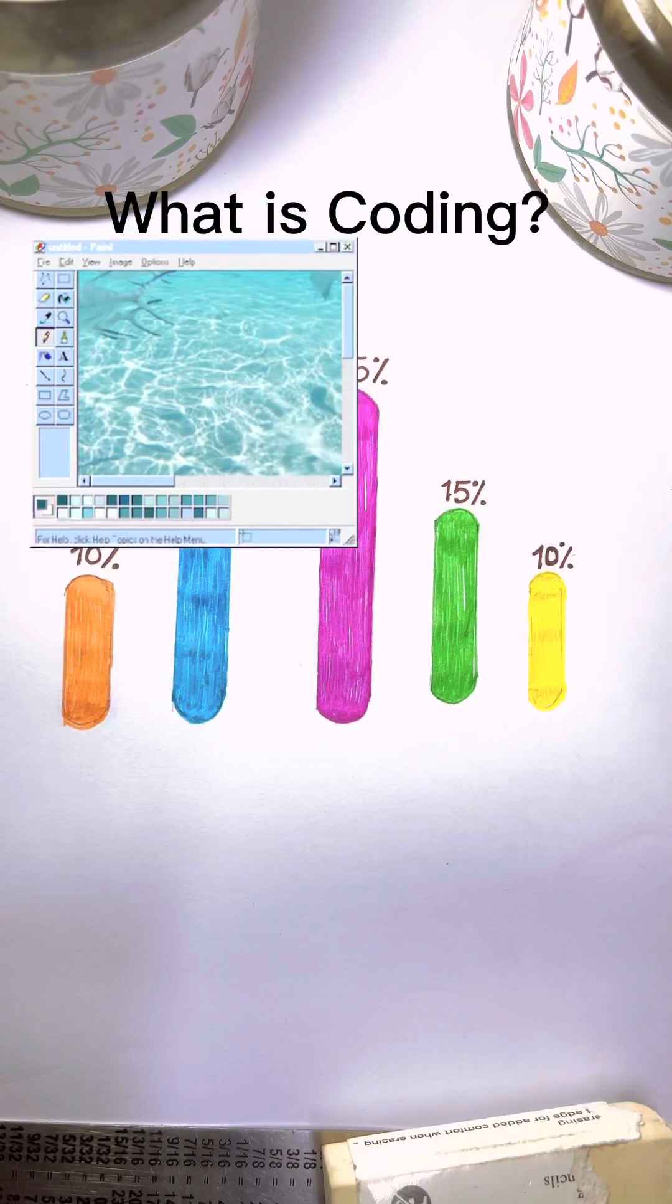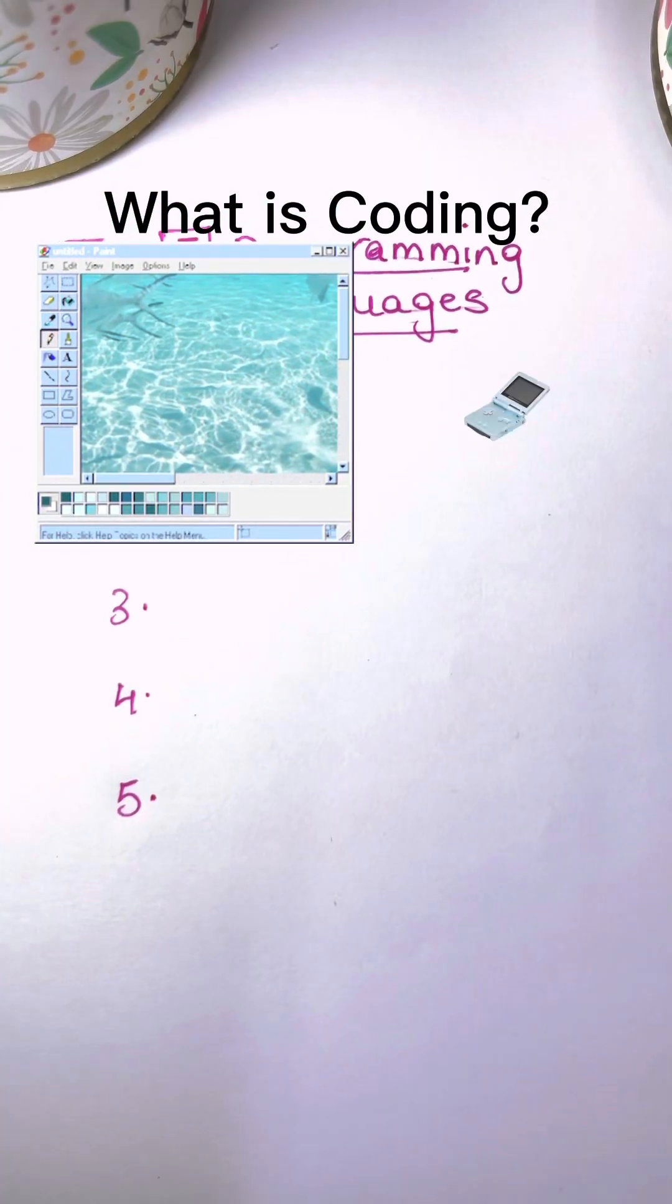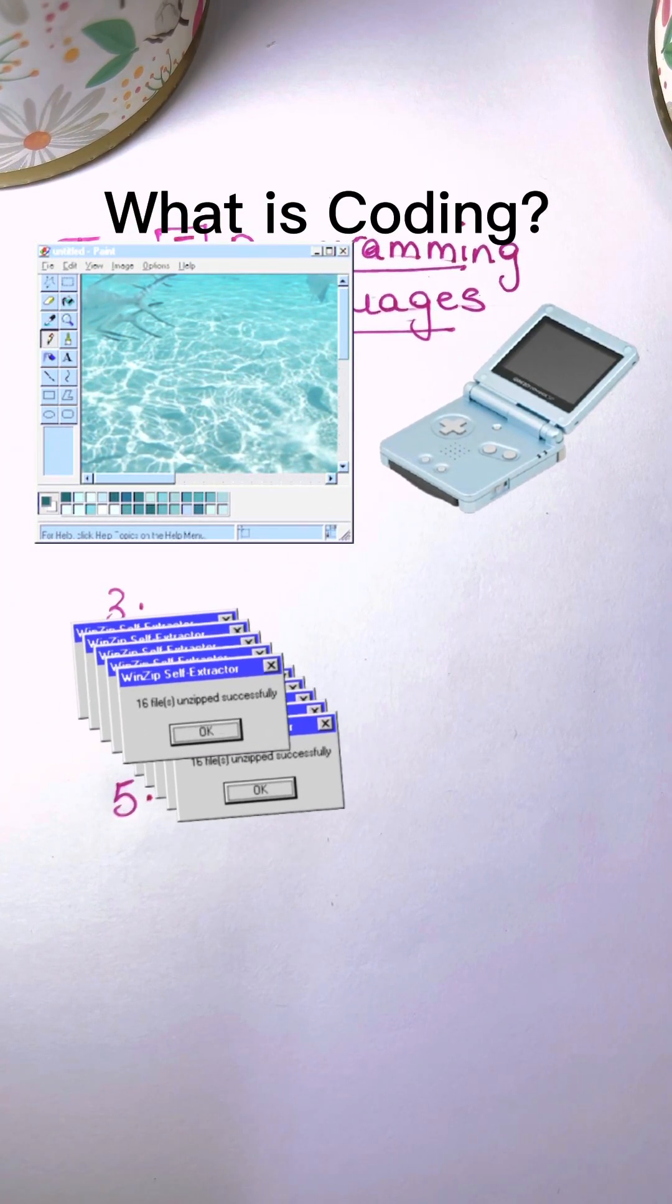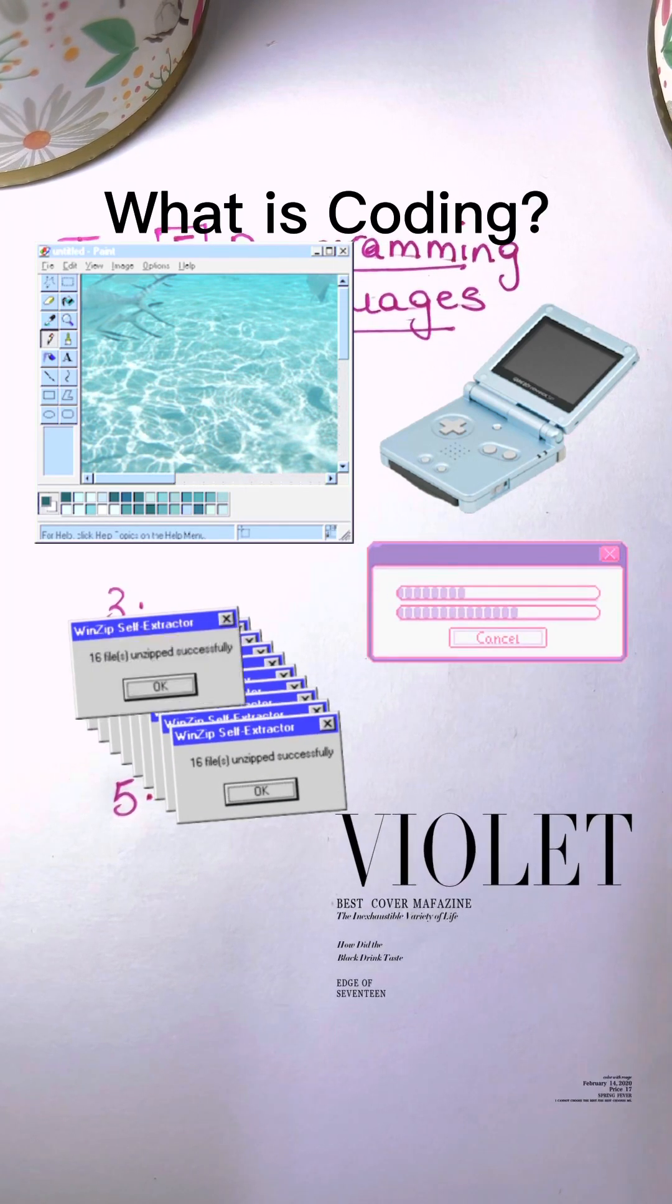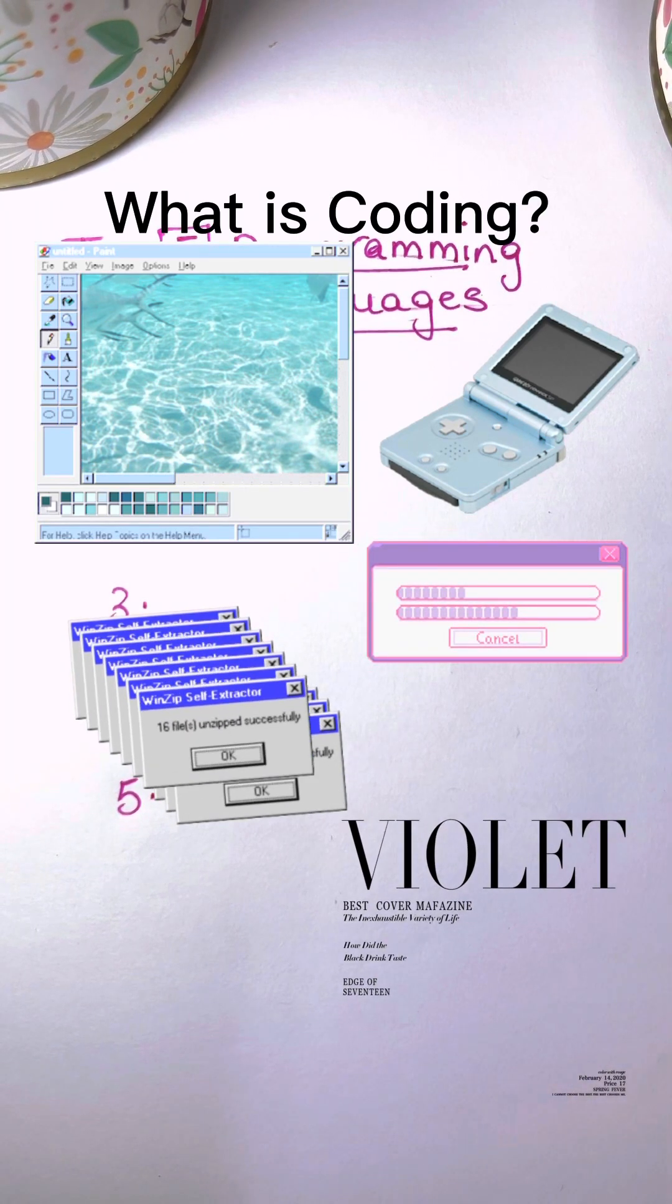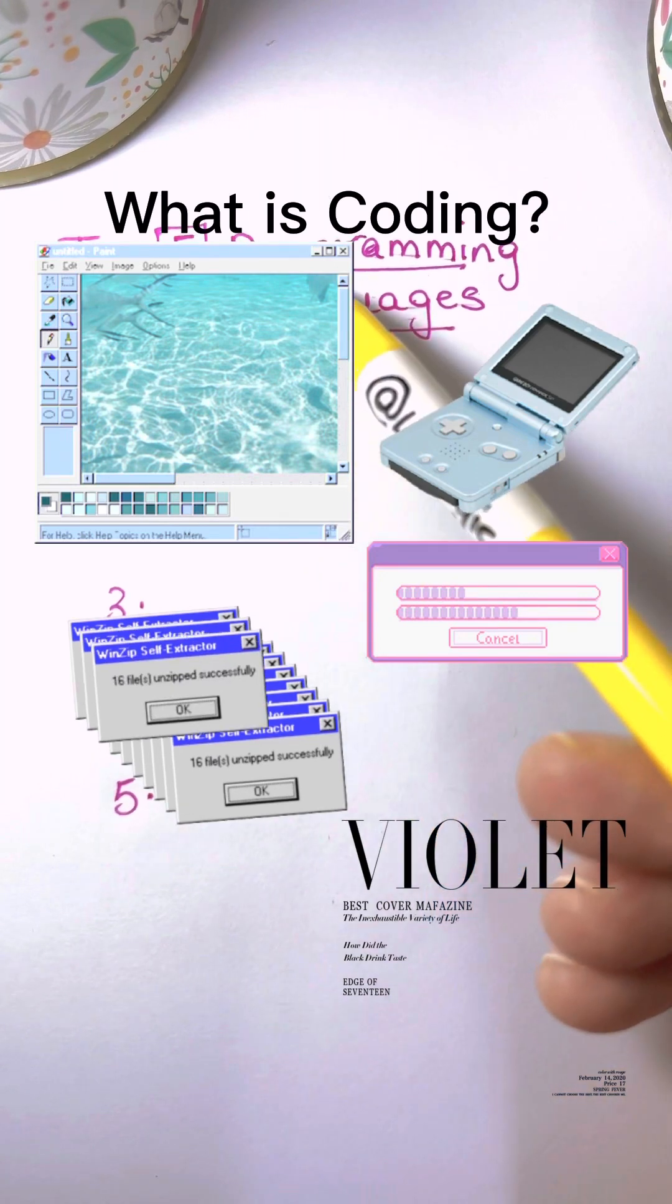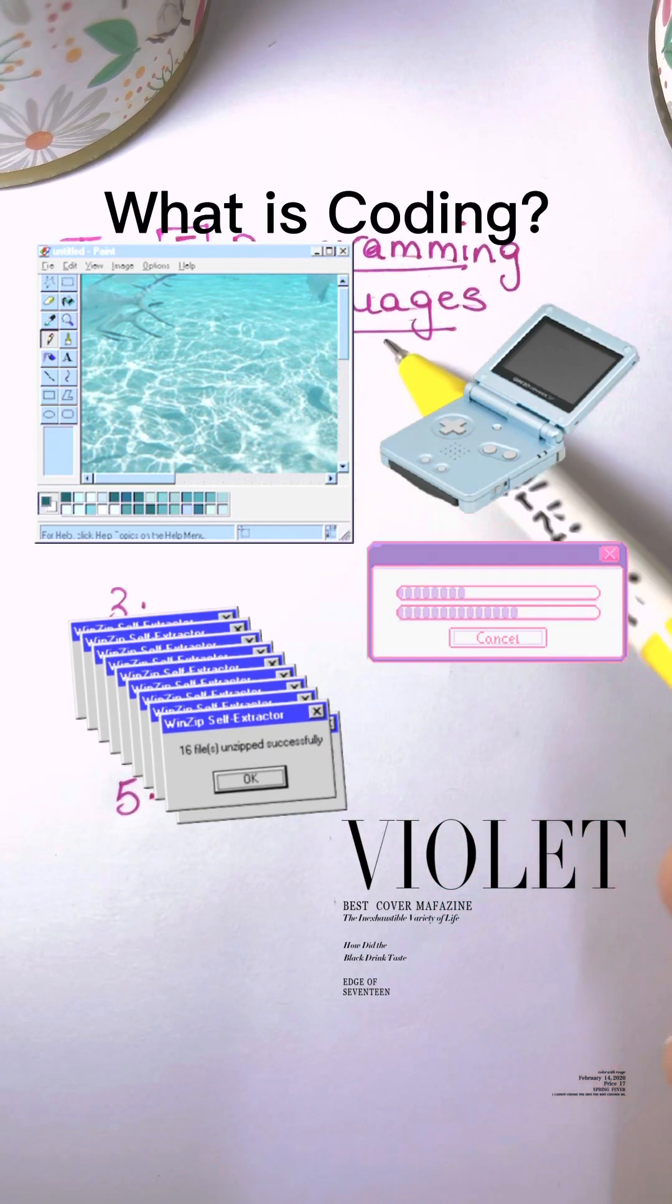Coding makes it possible for us to create computer software, games, apps, and websites. Coders or programmers are the people who write the programs behind everything we see and do on a computer.